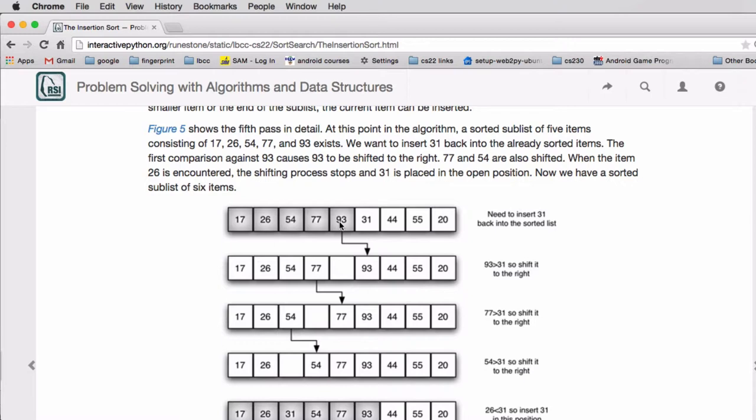And then it compares the 31 to 93 and asks the question, is the 93 bigger? Which means that the 93 would be going to the right of the 31. And if it is, it moves the 93 over.